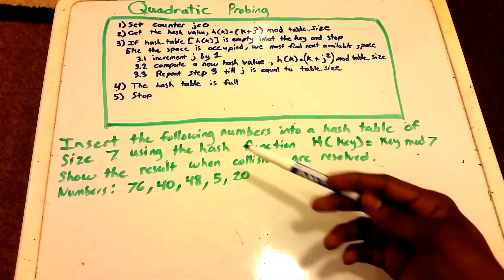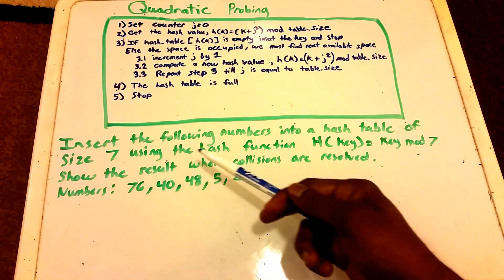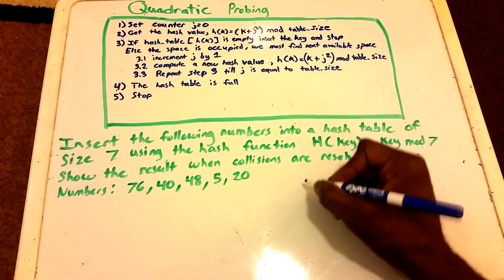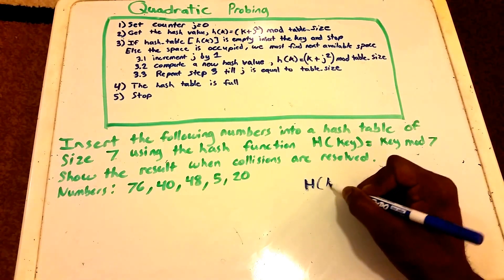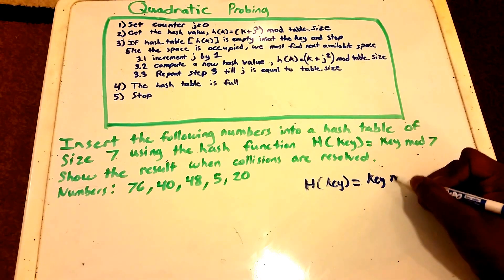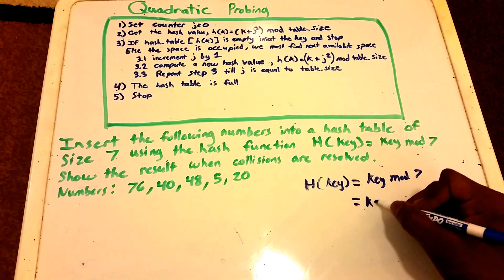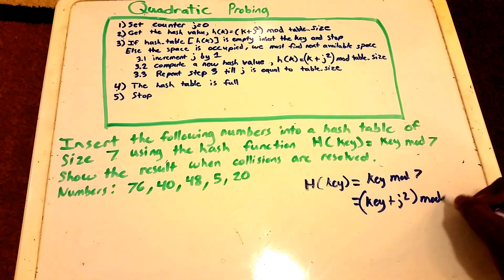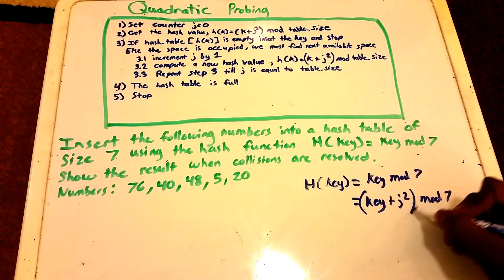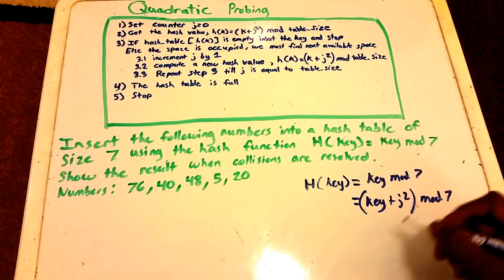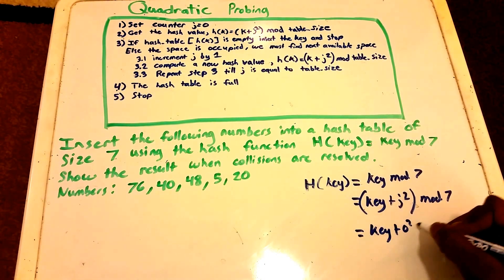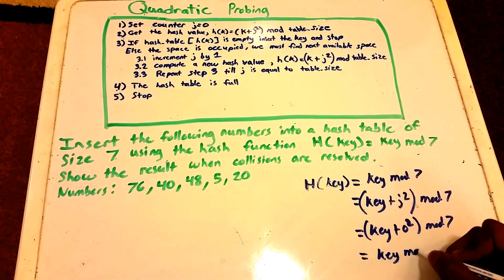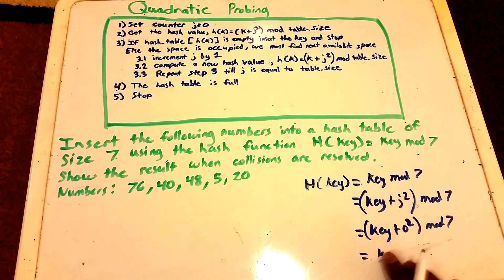Here is the problem: we want to insert the following numbers into a hash table of size seven using the hash function H(key) = key mod 7. Note that this is equal to our quadratic probing hash function (key + J²) mod 7, because right now J equals zero, so this becomes (key + 0²) mod 7, which is just key mod 7.